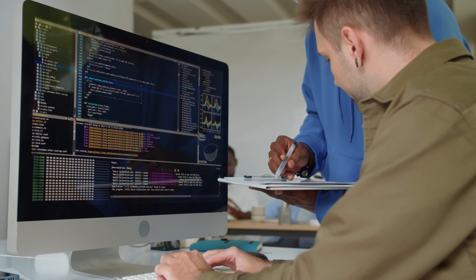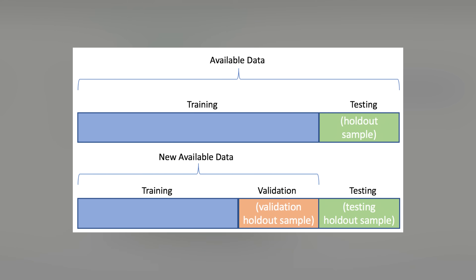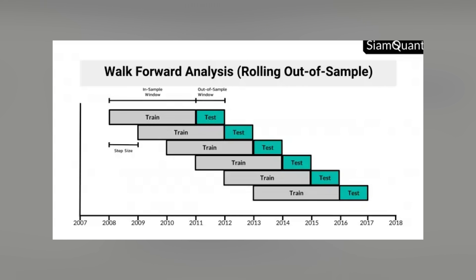At level two, things get more interesting and a little more challenging. You're now working with messier, more realistic data and structuring your projects like a professional data scientist rather than just messy experiments in notebooks. You're moving from a single notebook to a well-organized Python project with separate modules for data processing, feature engineering, model training, and evaluation. You use Git for version control and create configuration files to keep experiments reproducible. Instead of just random shuffling, you're using proper train/validation/test splits, often with walk-forward validation for time series data.